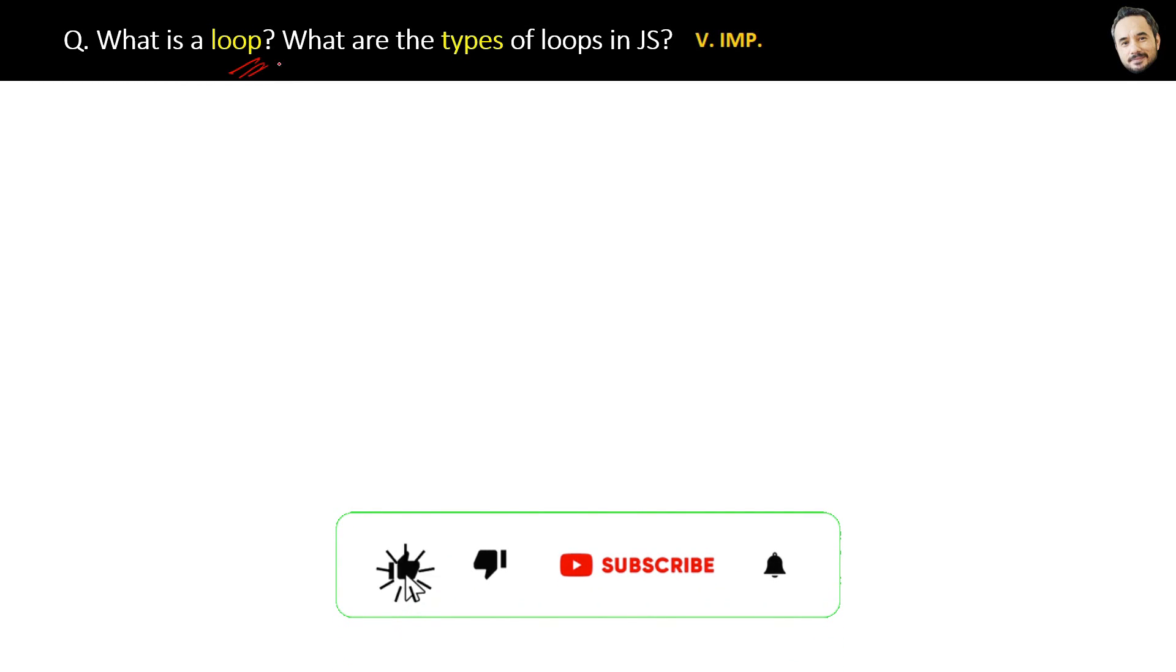What is a loop? What are the types of loops in JavaScript? Very important question, let's quickly see the loop.